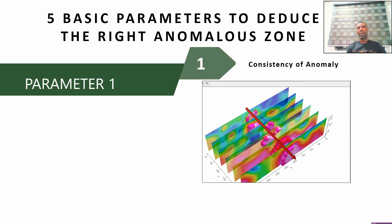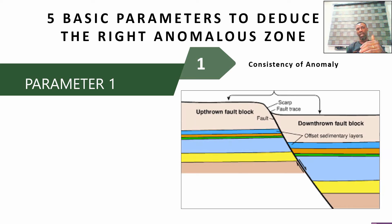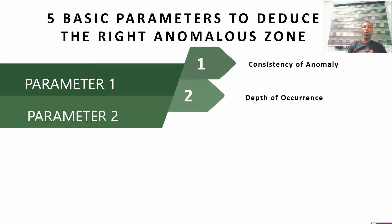If you see a shift, you start asking whether the block is faulted. You also look at whether there is any drop in depth, which might indicate faulting at that location. You might use other methods and evidence to confirm whether it is faulted or not. Consistency along the line is very, very important.